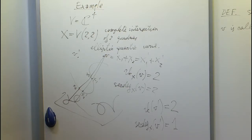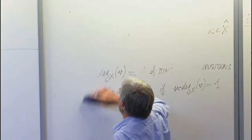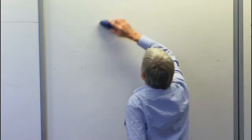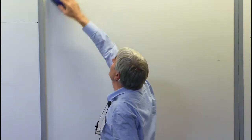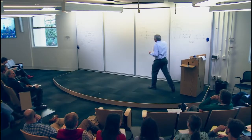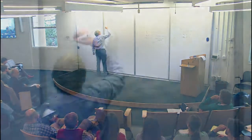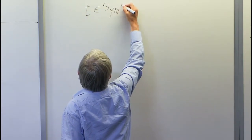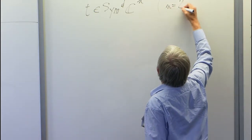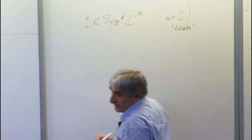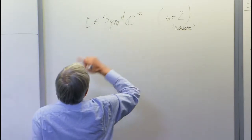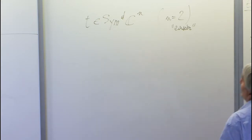I already used 20 minutes for examples, but I think they are quite important. As I promised to the organizer, I want to show how you can play with these things using Macaulay2. I want to pick a symmetric tensor — specifically the case of binary forms, Sym^D(Cⁿ).